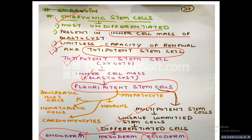Another important property of pluripotent stem cells is that when placed in any culture medium, they can give rise to different types of tissues — such as hepatocytes, neurons, cardiomyocytes, hematopoietic cells, and pancreatic islet cells. So the pluripotent stem cells have two pathways: towards multipotent lineage-committed stem cells, or when cultured, they can give rise to different types of body tissues.